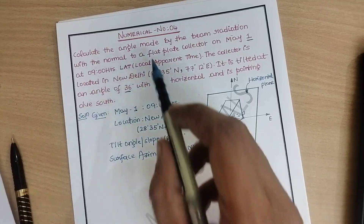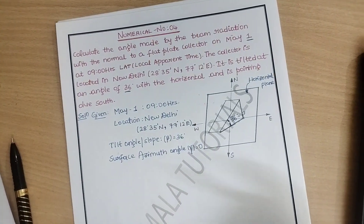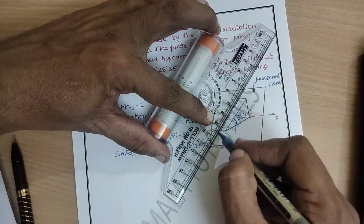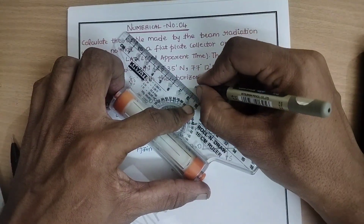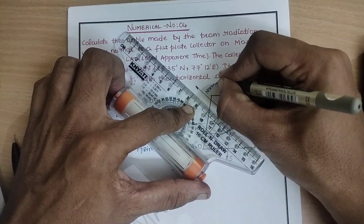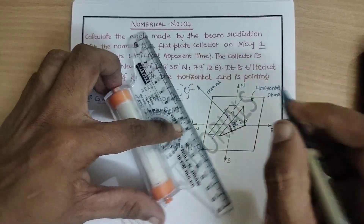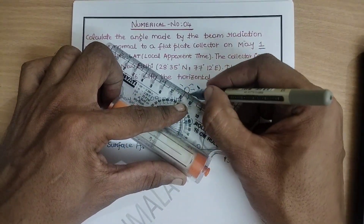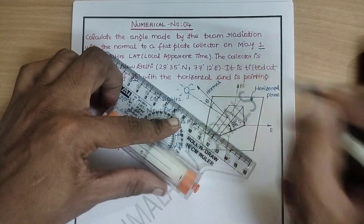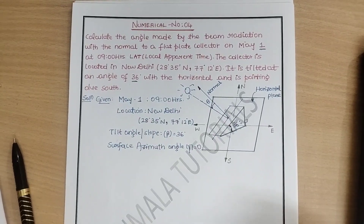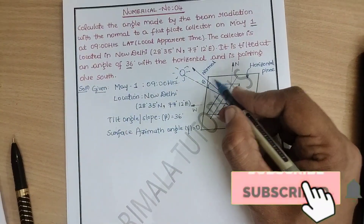We are supposed to find out the angle made by the beam radiation with respect to the normal. The question is: where is the normal? This is the surface of the flat plate collector, so the normal will be somewhere over here. Let us imagine the sun rays coming and falling on the flat plate collector. The angle theta is what we are supposed to find out — that is the angle made by the beam radiation with respect to the normal.